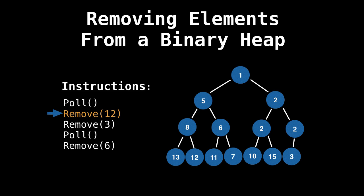Now we want to remove the value 12. So polling was removing the element at the root, but 12 is not at the root. However, we still want to be able to remove 12. So what we do is we have to search for 12 in our tree, even though we don't know its position yet. So we start at one, and we do a linear scan through all our elements until we find 12.